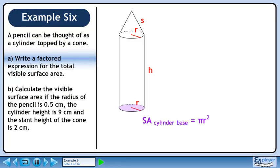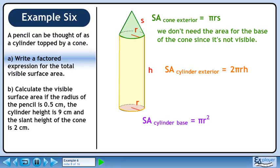The cylinder's base has a surface area of πr². The cylinder exterior has a surface area of 2πrh. The cone exterior has a surface area of πrs. We don't need the area for the base of the cone since it's not visible.